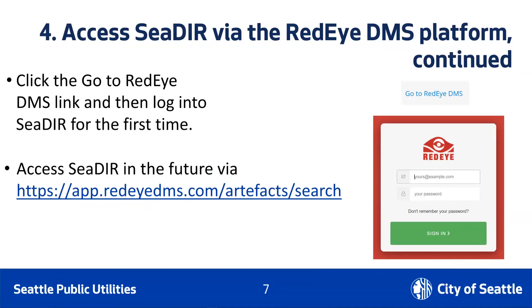The login screen will look like the one pictured to the bottom right. Log in using the email you filled out in the Microsoft Form and the password that you chose in the RedEye registration form. Once you click Sign In, you'll be granted access to Seattle Digital Infrastructure Records for the first time.